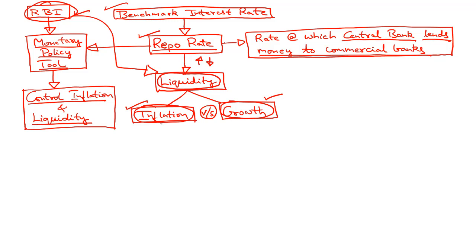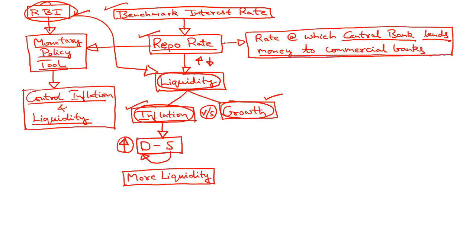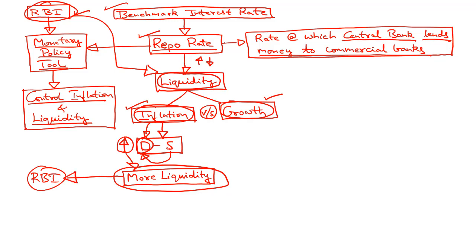High inflation is an outcome of a major mismatch between demand and supply. Inflationary tendencies develop in the market when demand is very high and the supply side is not able to catch up. The reason for high demand is more liquidity or more money in the hands of the people. So if inflation has to be controlled from the demand side, the option available to the RBI is to suck out liquidity from the market. On the other hand, if supply has to be increased, then the RBI has to promote economic growth through new investments.